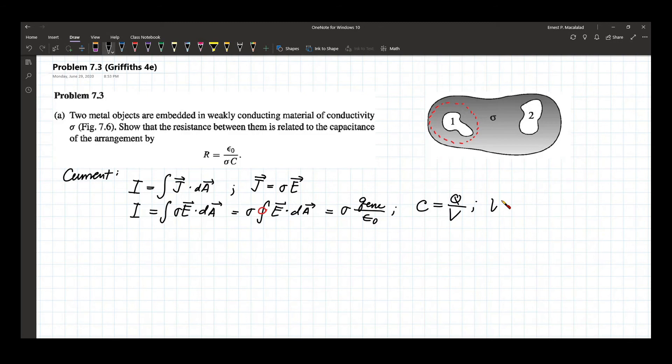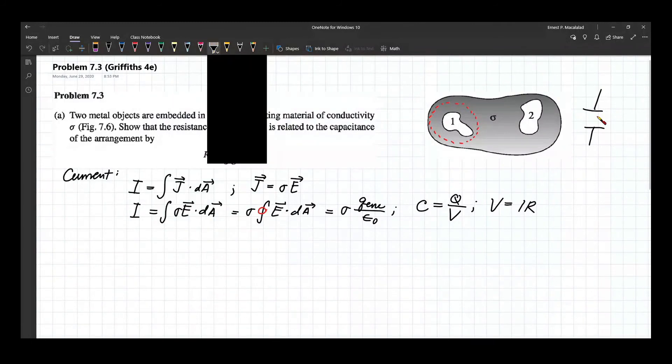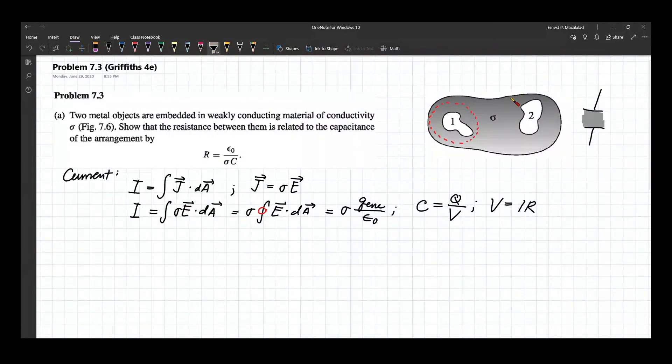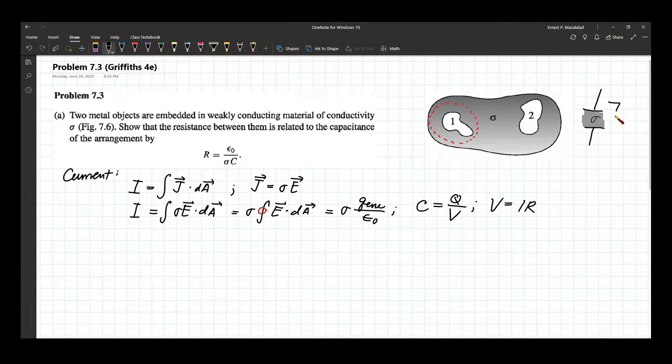Between them is your sigma. So the potential difference between the blades or between these two is related to the charge on either side and the capacitance of your capacitor.